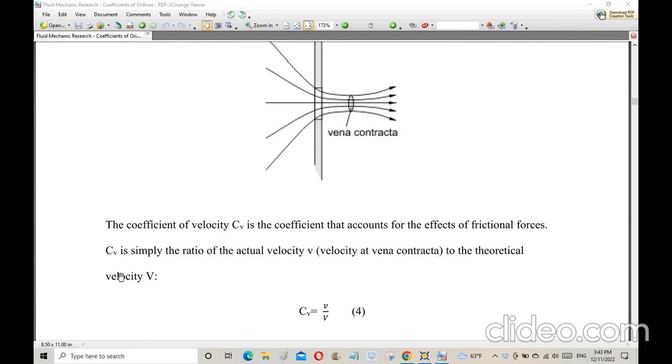Cv is simply the ratio of the actual velocity, which is lowercase v, to the theoretical velocity, which is uppercase V.